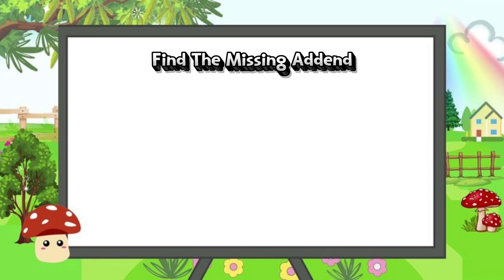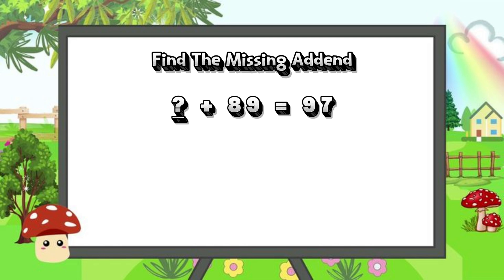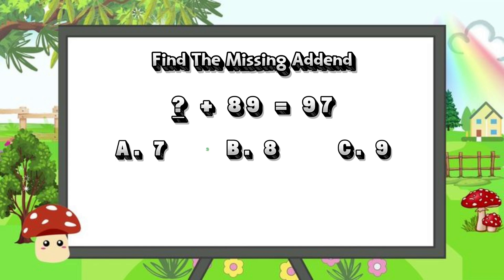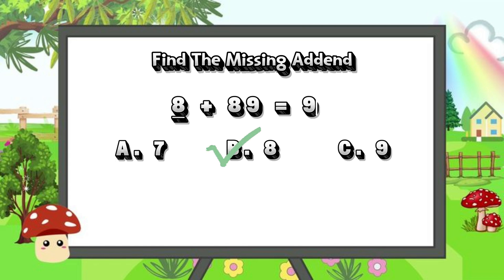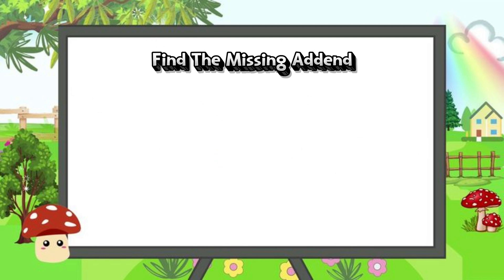Next, let's find the missing addend. Blank plus 89 is equals to 97. Is it letter A, 7? Letter B, 8? Or is it letter C, 9? And the correct answer is letter B. 8 plus 89 is equals to 97.